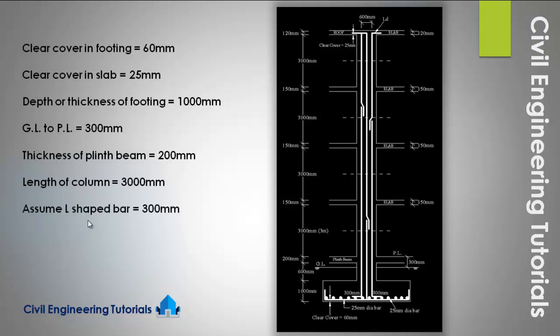The LSat bar at the bottom part of the column, inside the footing, is assumed as 300mm. This distance is generally given in the drawing; if not given, we assume it as 300mm.